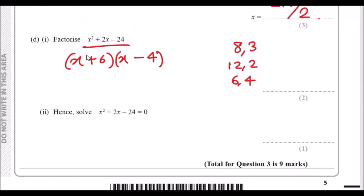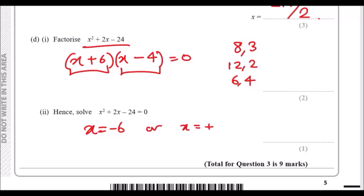Part e: hence solve x² + 2x − 24 = 0. Using the factorized form (x + 6)(x − 4) = 0, set each bracket to zero. If x + 6 = 0, then x = −6. If x − 4 = 0, then x = 4. Just flip the sign each time — that's all you ever do.